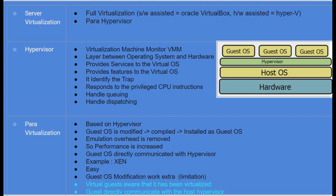Para virtualization is based on a hypervisor, but the key point is the guest operating system is modified, compiled, and then installed as a guest OS. Emulation overhead is removed, but there is a new overhead: we need to modify and recompile the guest operating system before installing it. Performance is increased and the guest OS can directly communicate with the hypervisor. An example is Xen. The virtual guest machines are aware that they have been virtualized.